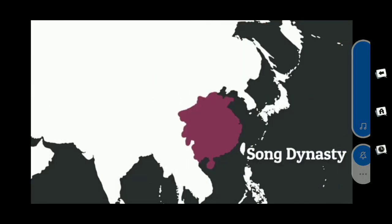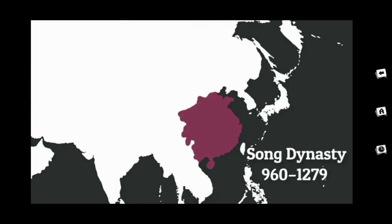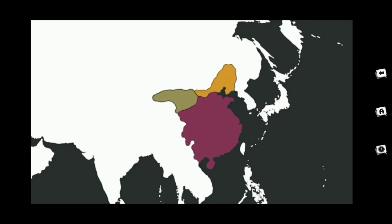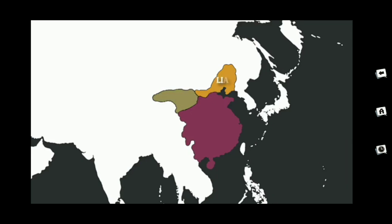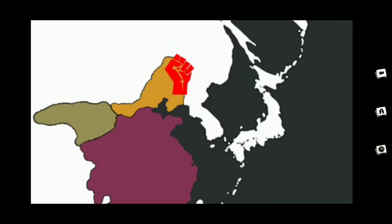In 960, the Song dynasty was founded by Emperor Taizu. The Song dynasty reunified most of China, but there were two more kingdoms in the north: Western Xia and Liao. Song attacked Liao for some territories closer to the Great Wall. The campaign was a failure, and Liao imposed heavy annual tributes from the Song treasury.